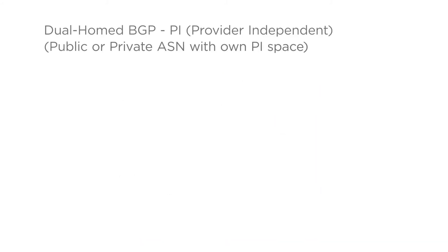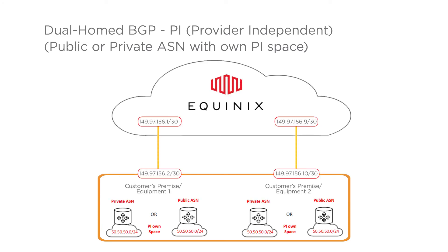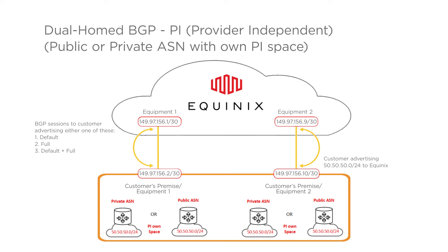Dual-home BGP, PI — provider-independent — public or private ASN with own PI space. This is similar to the previous example, except here the customer has their own PI space. The customer's own subnet has to be greater than or equal to /24. They either have their own public ASN or are using a private ASN assigned by Equinix. Equinix provides two IPv4 /30s or two IPv6 /126s for configuration, free of charge. BGP policy is used to select default routes, full routes, or default plus full routes.